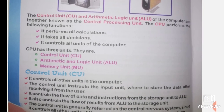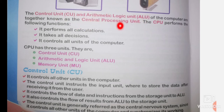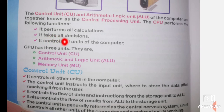Inside the CPU are the Control Unit and the Arithmetic Logic Unit, as seen in the block diagram. Together, these form the CPU. The CPU performs all calculations — addition, subtraction, multiplication, division — and takes all decisions. It also controls all units of the computer. For a computer to function correctly, we need the CPU.